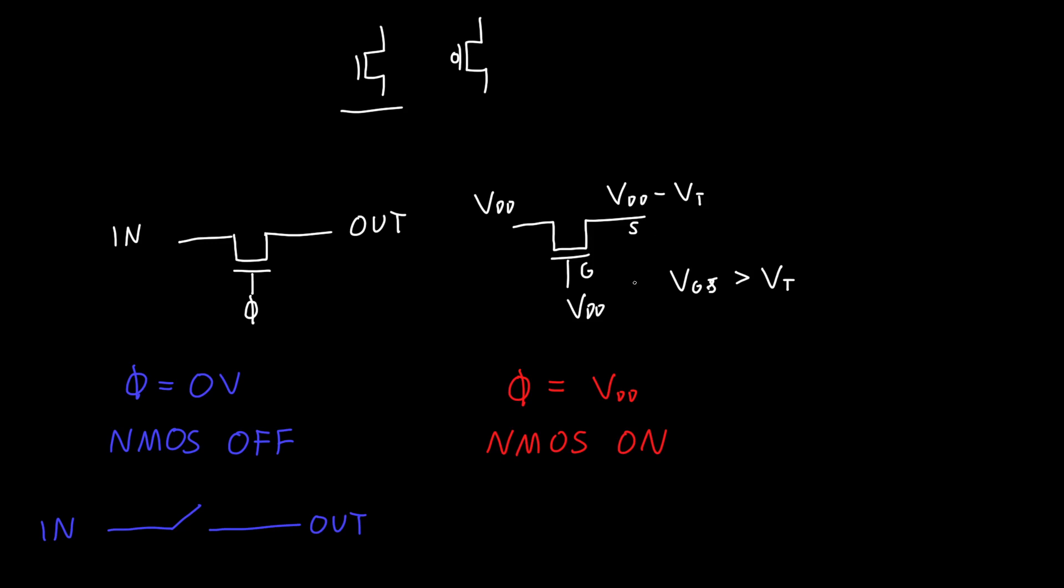And so the NMOS isn't very good at passing zeros. And so while we want this to look like just a wire from the input to the output, it's right now kind of a bad wire. So it sort of passes our input signal, but not quite.